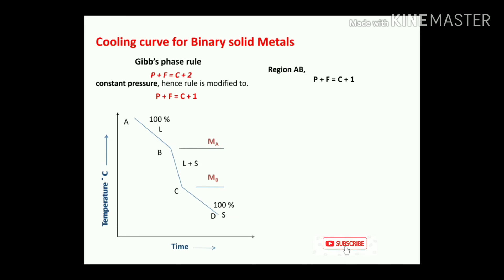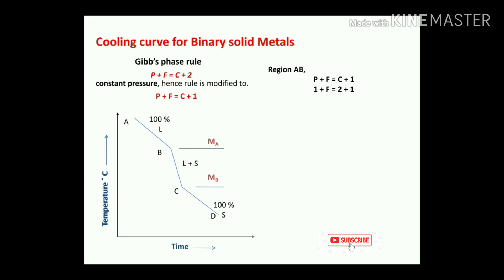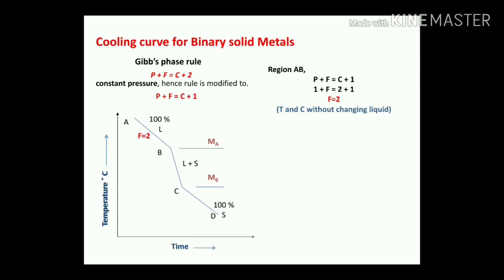Applying the Gibbs phase rule to region A to B: P plus F equals C plus 1. Here P equals 1 because it is 100% liquid, so 1 plus F equals 2 plus 1 (C equals 2 for a binary system). Therefore F equals 2, meaning temperature and composition can change without changing the liquid phase. The liquid remains liquid all the way to point B.